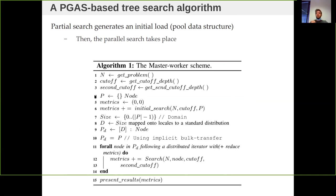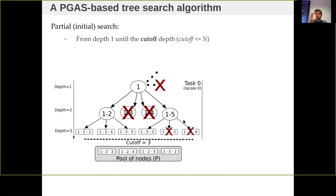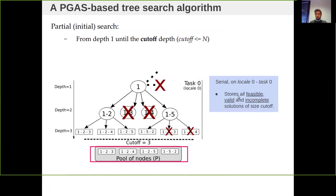The algorithm comes from multi-core programming — it looks like an intra-node algorithm, but as we are using PGAS they look alike. The algorithm starts on CPU locale zero, serially performing what we call a partial search. In the partial search, we evaluate only a fraction of the solution space. This is a serial task on locale zero where we enumerate feasible values as incomplete solutions of size cutoff.